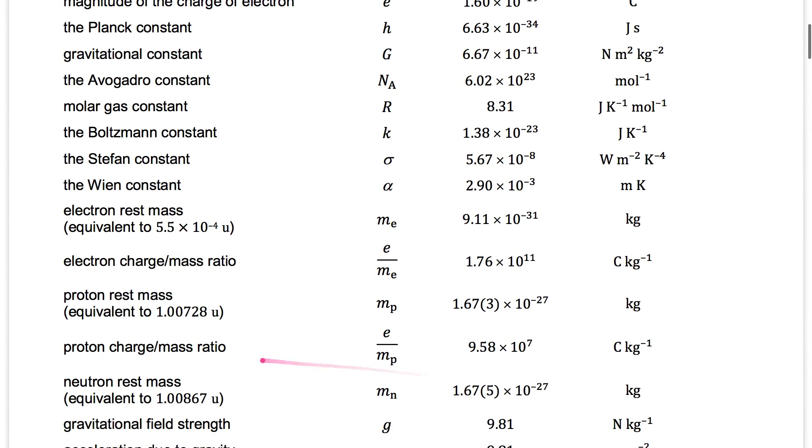The proton rest mass is given at 1.00728 units. And the proton charge mass, the same thing we've done with the electron, we're doing with the proton, and it's 9.58 times 10 to power 7 coulombs per kg.